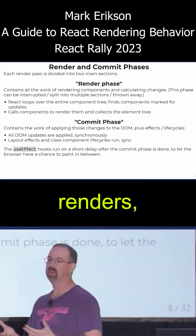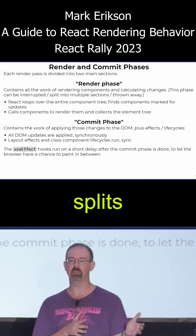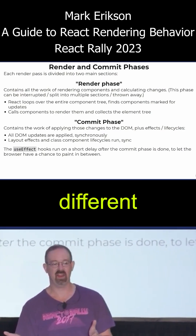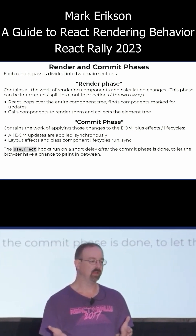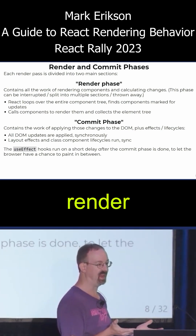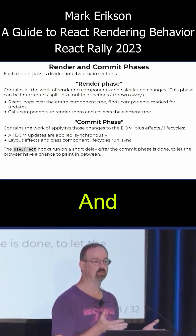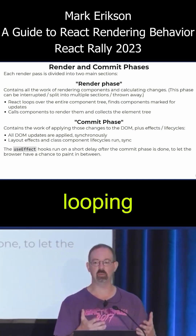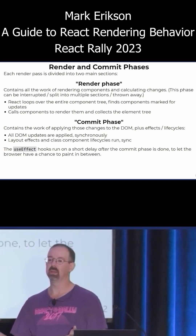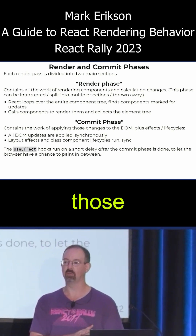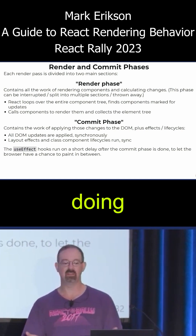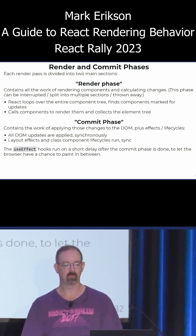Every time React renders, it splits the work into two distinct phases. The first phase is called the render phase, and this is when it's actually looping over all the components and calling them, collecting those element objects, and doing the diffing work.